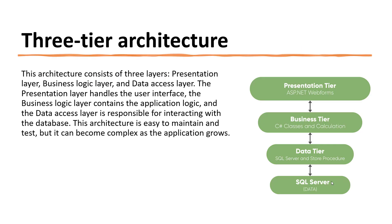Now we are going to discuss the three-tier architecture. This architecture consists of three layers: the presentation layer, the business layer, and the data access layer. The presentation layer handles the user interface, the business logic layer contains the application logic, and the data access layer is responsible for interacting with the database.